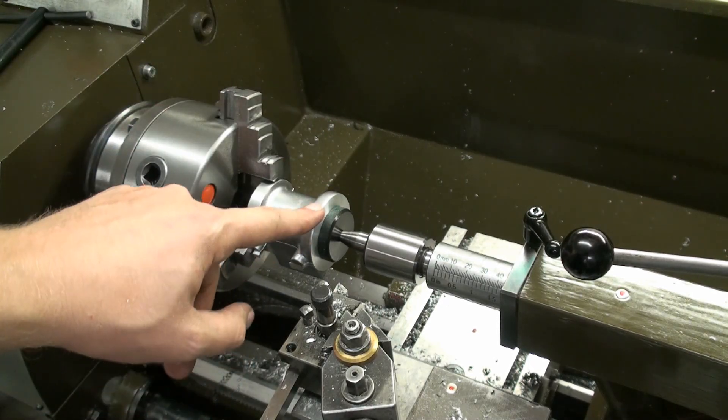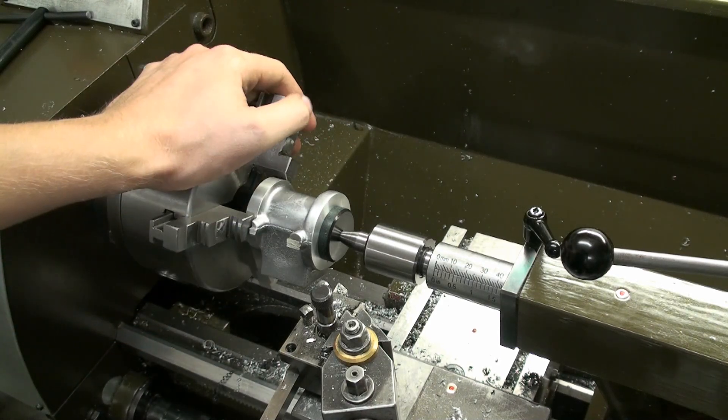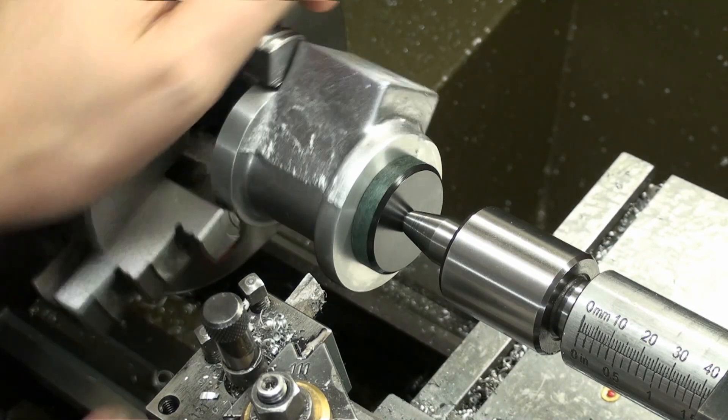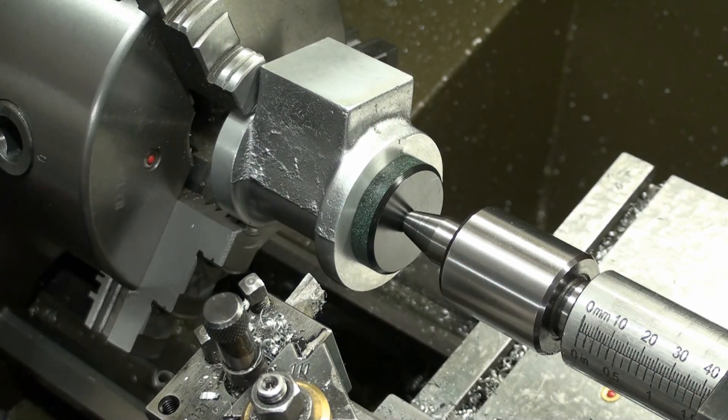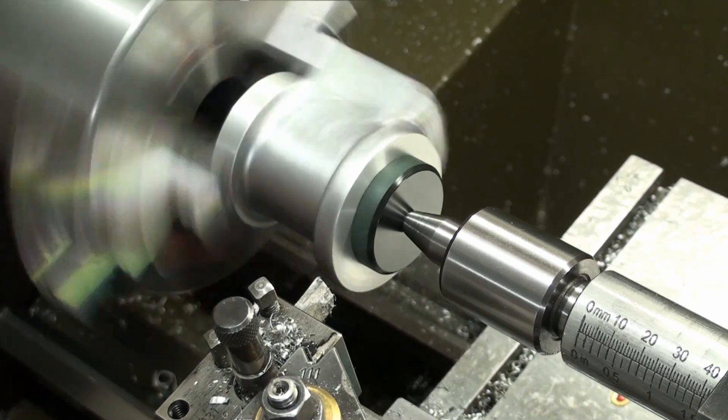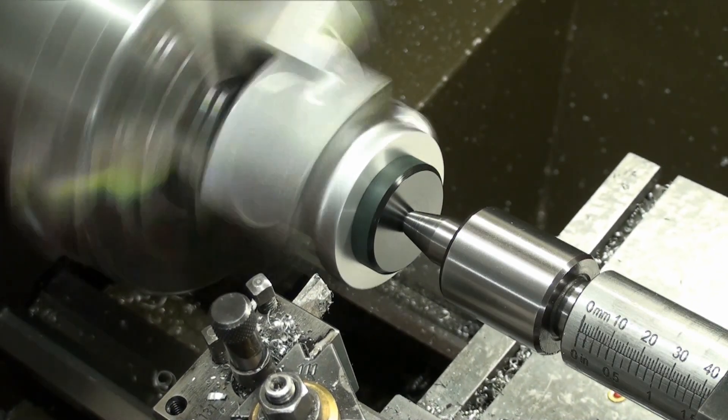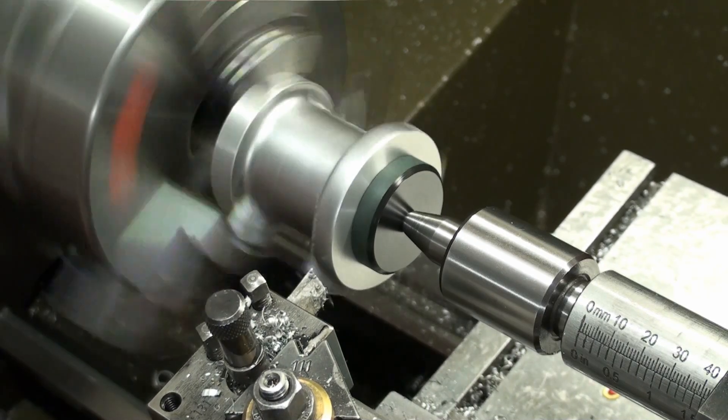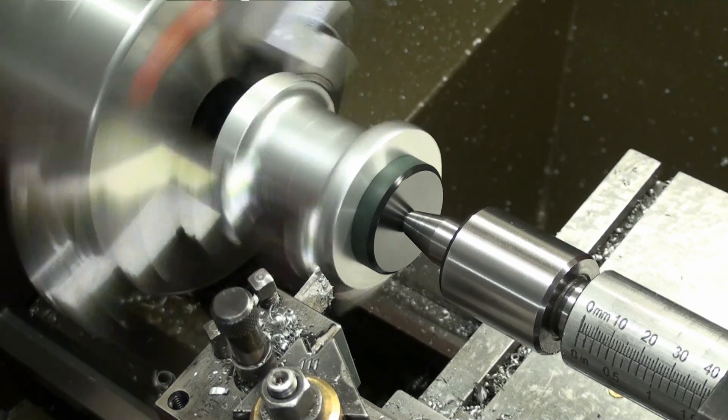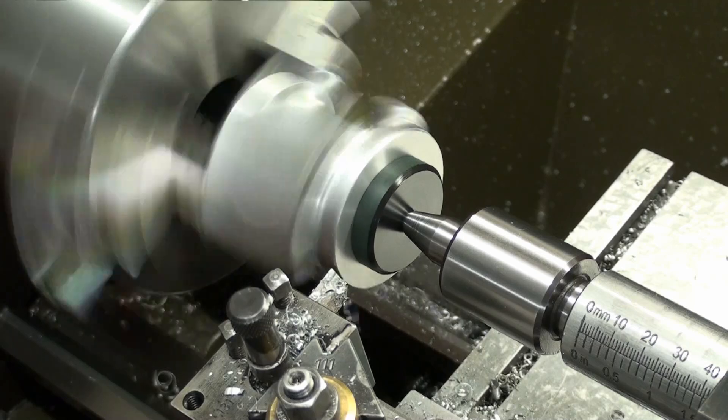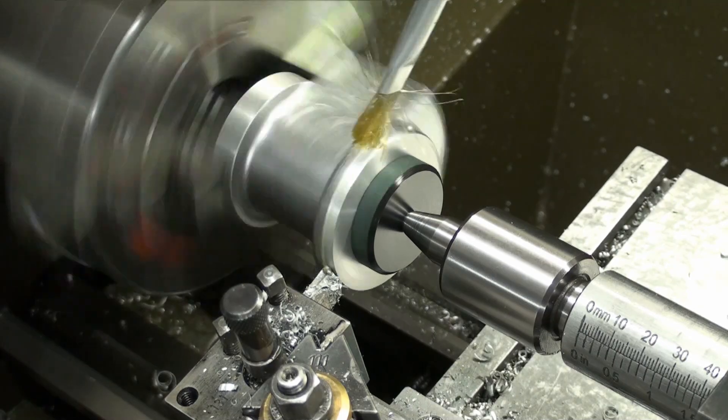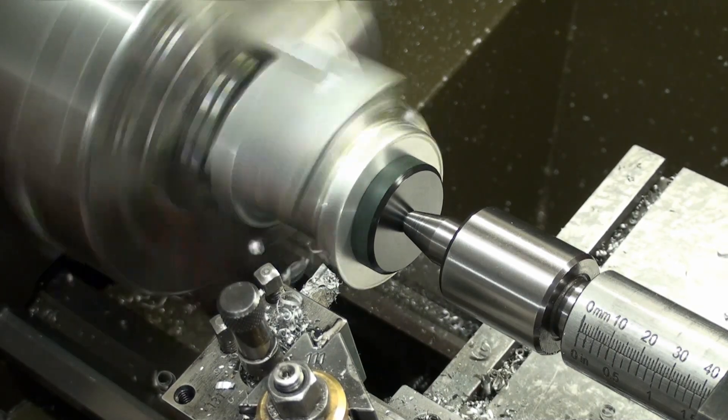Now we'll turn down this diameter. And I think that's the last operation on the lathe for this part. Another different camera angle and now we machine this down. We have to be careful, there is a lot of interrupted cut on this part.